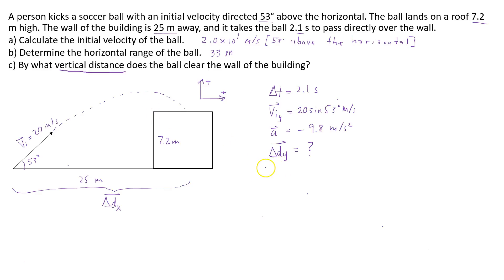The kinematics formula that I'm going to use is going to be the formula that has displacement in it. The initial vertical velocity times delta t plus 1/2 times the acceleration times delta t squared. It's the same formula that was used in the previous video.